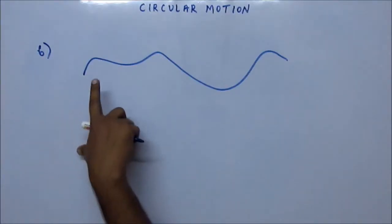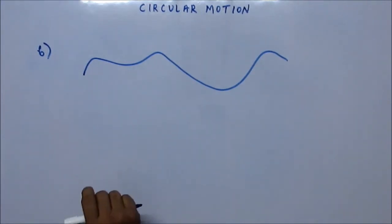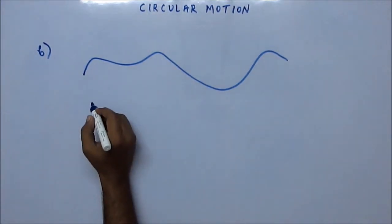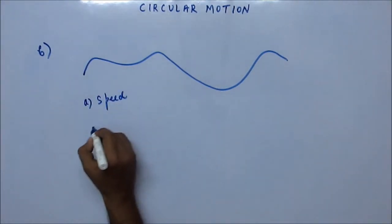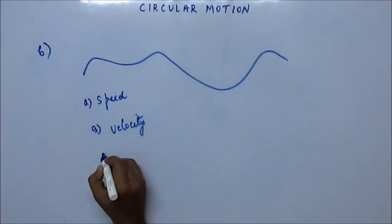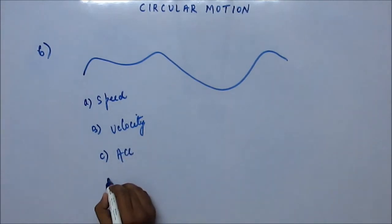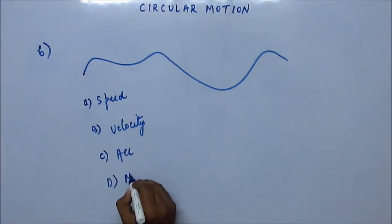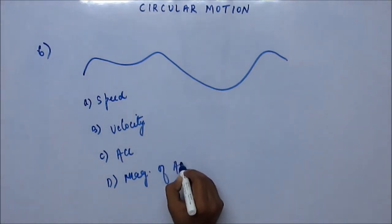An object is moving on a curved path. Which of the following quantities may remain constant? A: speed, B: velocity, C: acceleration, and D: magnitude of acceleration.